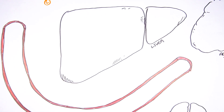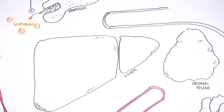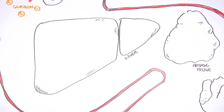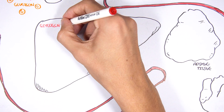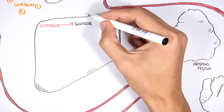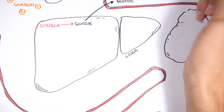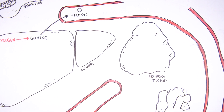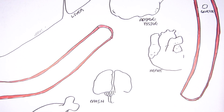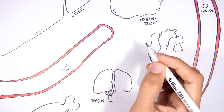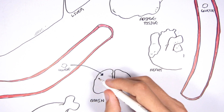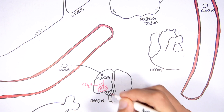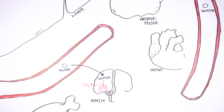Glucagon is the main hormone in the fasted state. Focusing on the liver: during the fasted state, glycogen will be broken down by the liver to glucose. This glucose can then be released into the blood to increase blood glucose levels and continue supplying the body's tissues and organs. In the brain, glucose will form ATP, with carbon dioxide as waste.